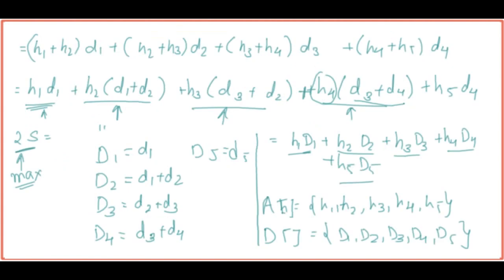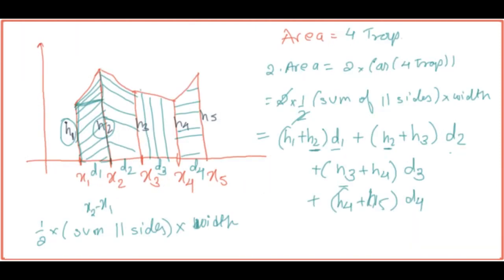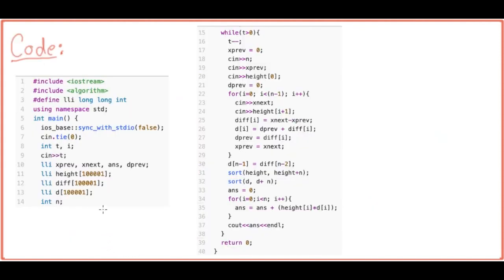So the approach is: compute the capital D array with values d1, d1+d2, d2+d3, d3+d4, d4; sort both D and the heights array H; then compute the sum of their element-wise products. That sum gives us the maximum twice-area, which is the required answer.